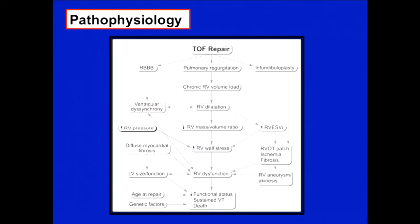What I want to talk about today is how do we prevent significant pulmonary regurgitation. If you look at the pathophysiology of TOF correction, pulmonary regurgitation is one of the major factors causing chronic right ventricular volume overload and RV dysfunction, along with other factors such as RV outflow tract patch ischemia, RV aneurysm, and diffuse myocardial fibrosis.